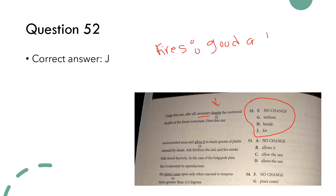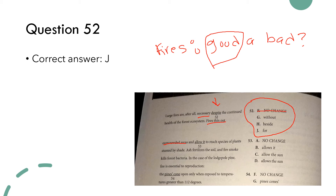We need to decide: are the fires good or bad? If I have 'despite,' that means the fires are bad. The next sentence says fires thin out overcrowded areas — that's something good the fire is doing. So there's no way 'no change' with the word 'despite' is going to work. That takes us down to G, H, and J.